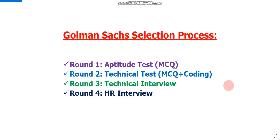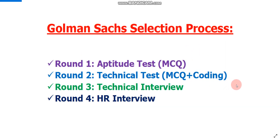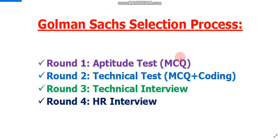Let me show you the Goldman selection process. There will be total four rounds. Round one will be an aptitude test — purely MCQ type. Round two will be a technical test. Please note: once you qualify round one, only then you will be eligible for round two. Round one and round two will be held on different days with at least 10 days gap between them, so you will get a lot of time to prepare for round two if you clear round one. But round one is difficult.